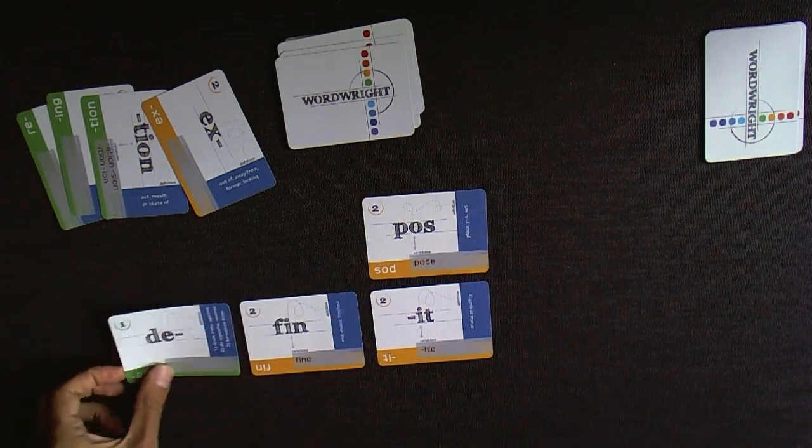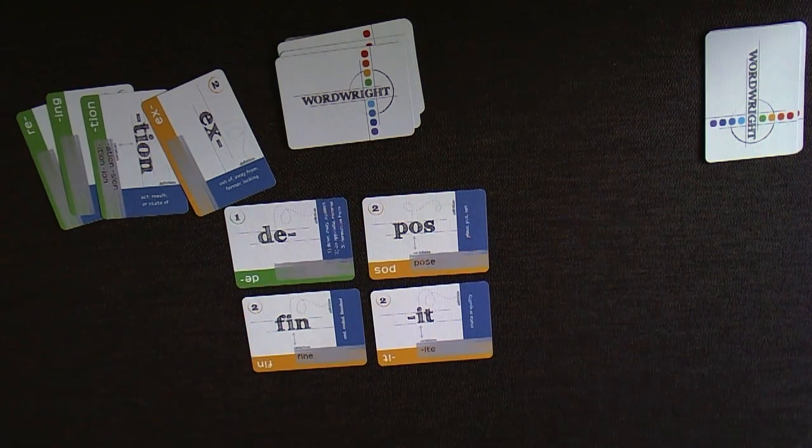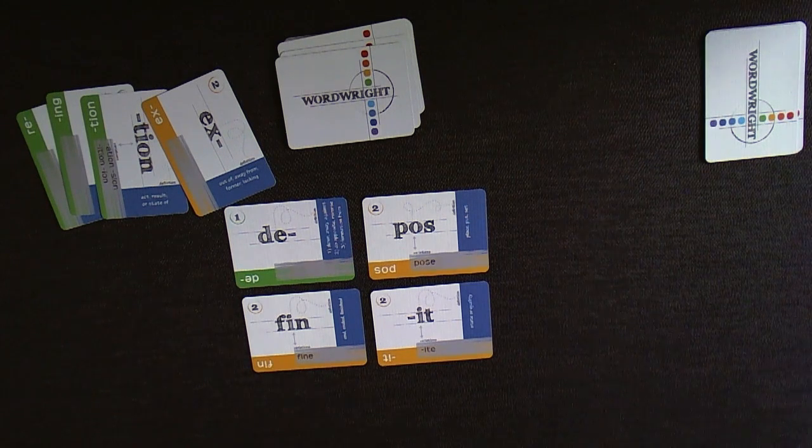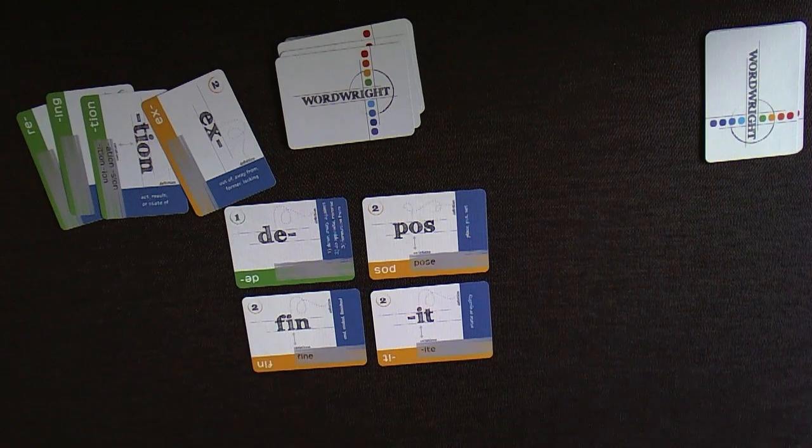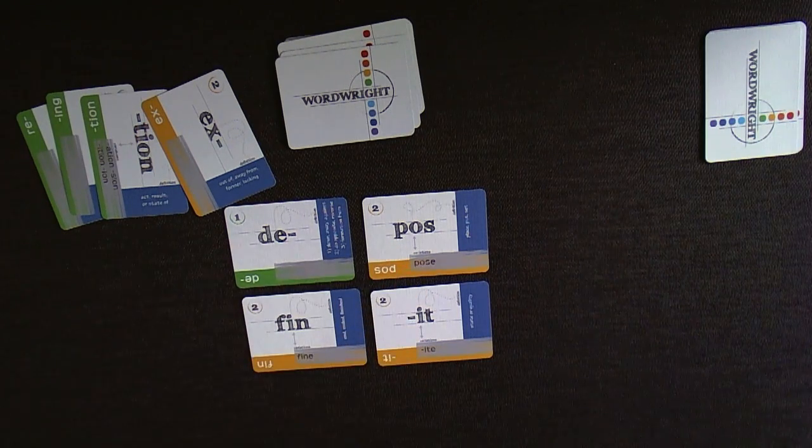She could make depose above finite, making two other words, define and posit. She would score three points for depose, plus three points for define, plus four points for posit.